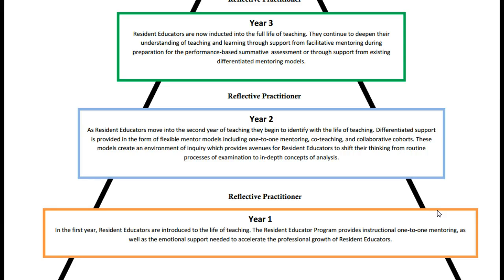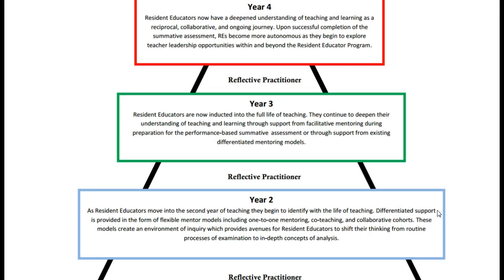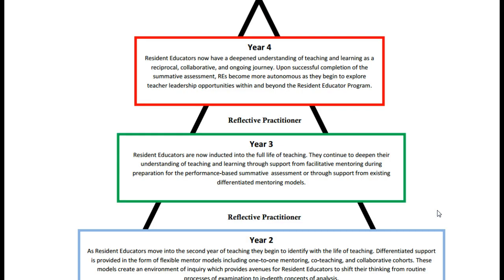Moving on from year 2 to year 3, there will not be a specific mentor assigned to each resident educator. During year 3, if the district and resident educator agree that the RE is capable of performing well on the summative assessment, then the resident educator could take the summative assessment, and at that point year 4 would become more reflective.